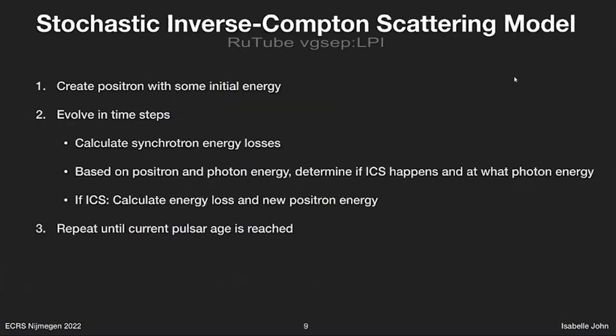We created a model to take this into account. It works like this: we create a positron at some initial energy and evolve it in time, accounting for energy losses from synchrotron radiation. Then in each time step, we use a Monte Carlo to determine whether an inverse Compton scattering interaction happens, at what photon energy, and we calculate the resulting energy loss and new positron energy. We keep doing this until we reach the age of the pulsar — the amount of time these particles have had to cool.